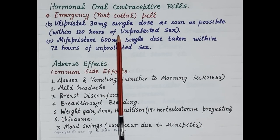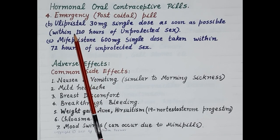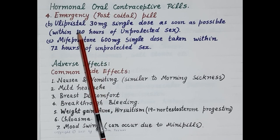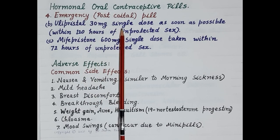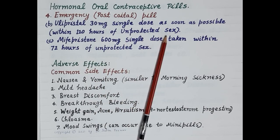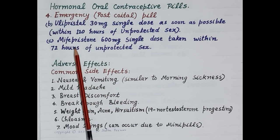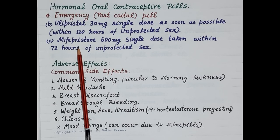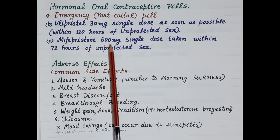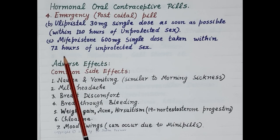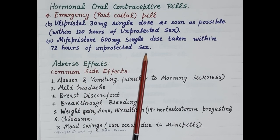The second regimen consists of ulipristal (an anti-progesterone) 30 mg as a single dose, taken as soon as possible within 120 hours of unprotected sex. The third regimen consists of mifepristone (also an anti-progesterone) 600 mg as a single dose, taken within 72 hours of unprotected sex.